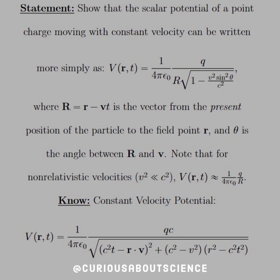Theta is the angle between capital R and V. Note that for non-relativistic velocities, relativistic will come in chapter 12, let's not hurt ourselves already. We see that V squared is much less than C squared, so that approximation term in the square root kind of fades away, and we're left with 1 over 4π epsilon naught Q over R.